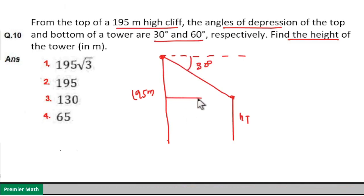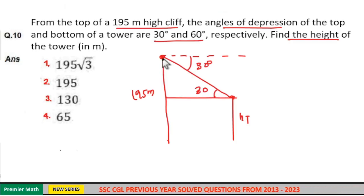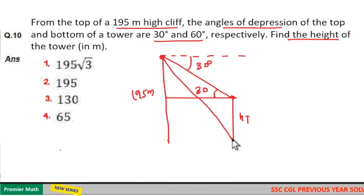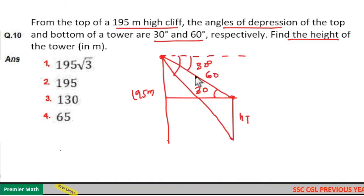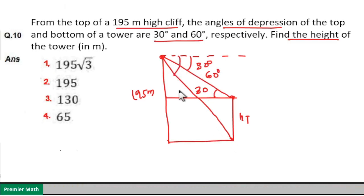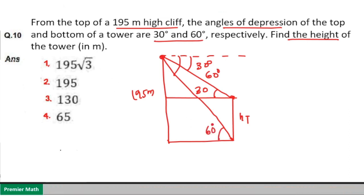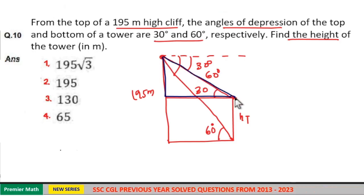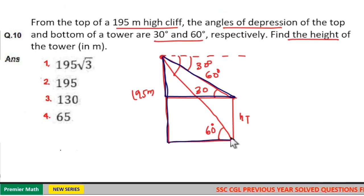If this angle is 30 degrees and you draw a horizontal line here, this angle is also 30 degrees. Now, from the top of the cliff to the bottom of the tower, the angle of depression is 60 degrees. That means this angle is also 60 degrees. Now we have two triangles — one with angle 30 degrees and the other with angle 60 degrees.